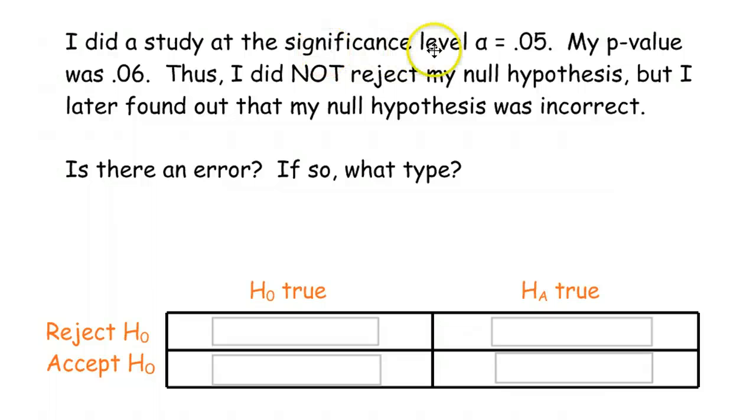I did a study at significance level alpha is 0.05. P-value is 0.06. Thus, I did not reject my null, but I later found out that my null was incorrect. So, the null was not correct. The alternative was, in fact, true. But you failed to reject. You accepted the null when it was not true. That means that you made a mistake. You made a Type II error.